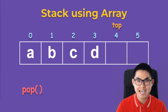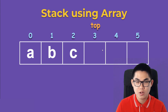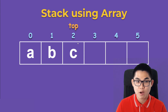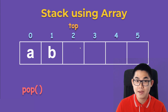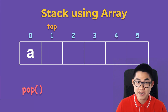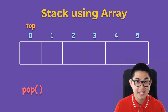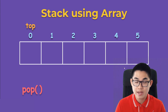When we pop the stack we do the exact opposite: we move top to the left and then empty the slot by setting it to null. We pop again — top moves left, slot is emptied. Pop again — top to the left and empty B. One last time: decrement top and set A to null. If we try to pop again, top is zero so the stack is empty and pop would not do anything.